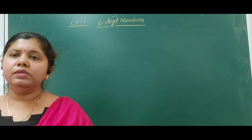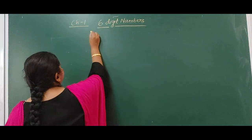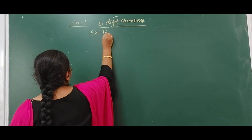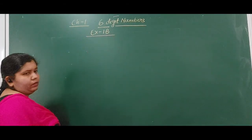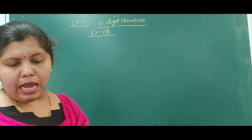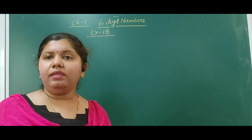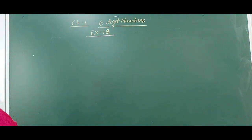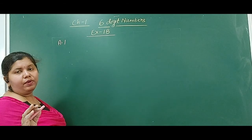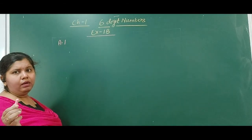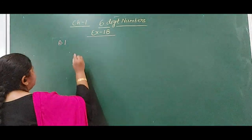Now let us do some questions from Exercise 1B. Question number 1: How many zeros are there in the smallest 6-digit number? So first of all, a smallest 6-digit number always starts with 1 and the rest of the digits will be 0. So the first digit will be 1.